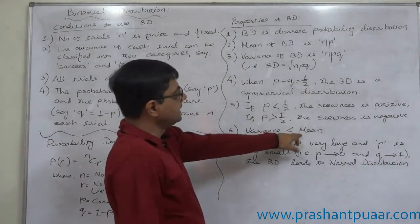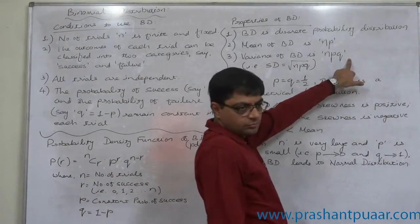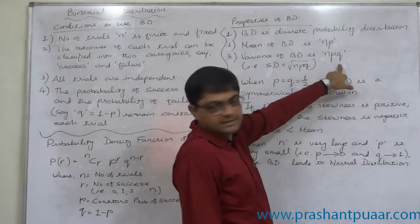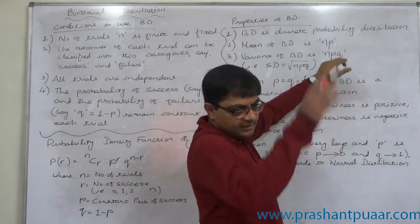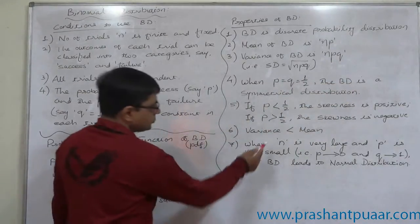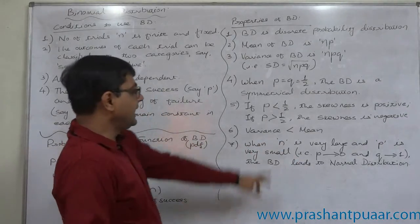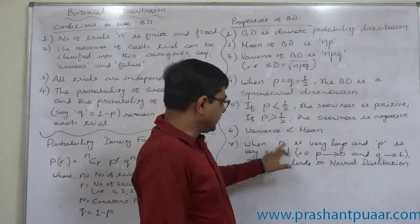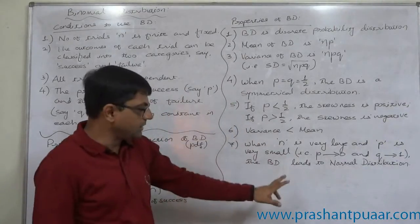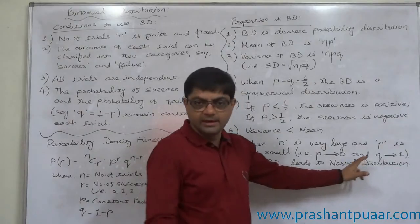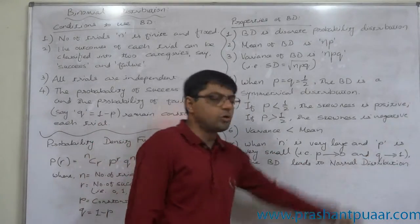Variance is always less than mean. The mean is Np and the variance is Npq, and since Q is always less than 1, any number multiplied by a value less than 1 reduces the original value — so variance is always practically less than mean. When N is very large and P is very small (P tends to 0, Q tends to 1), the binomial distribution leads to normal distribution.